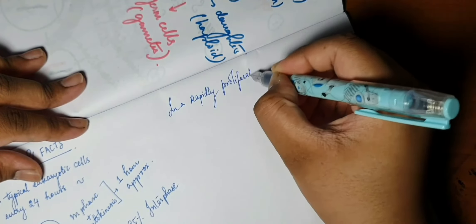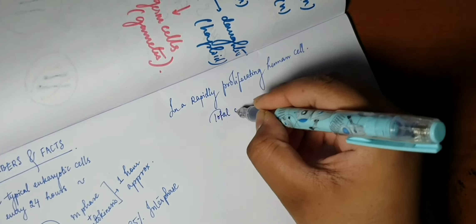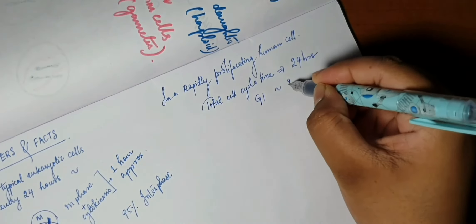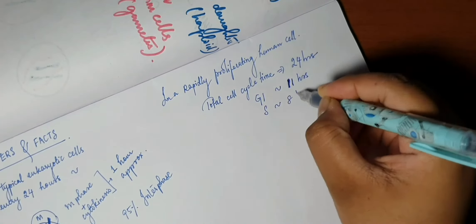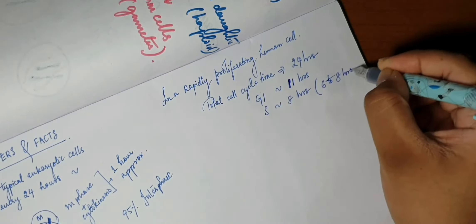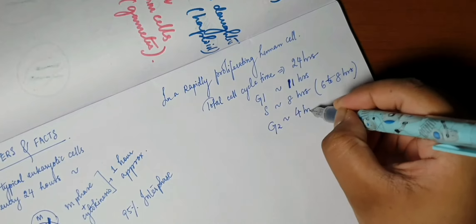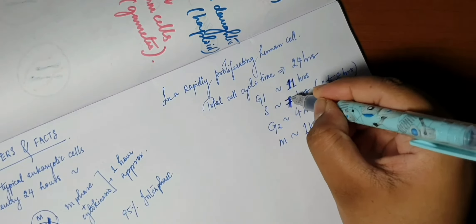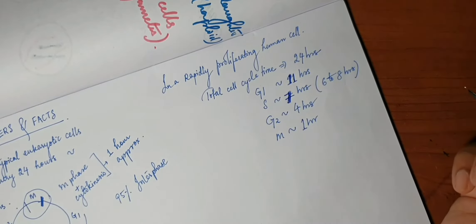Now in a rapidly proliferating cell in humans, the total cell cycle time is say 24 hours. So G1 would be 11 hours, S phase would be 6 to 8 hours, so we can say 7 hours, G2 would be 4 hours, and M phase would take about 1 hour along with cytokinesis.